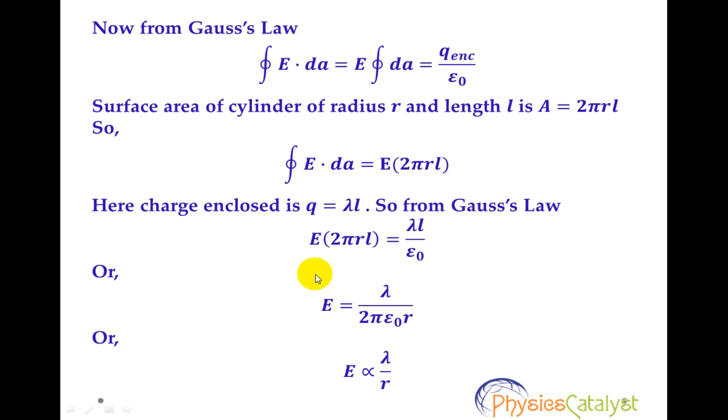Or we can say that electric field E equals lambda over 2 pi epsilon naught R. So here we see that electric field E is proportional to lambda over R.